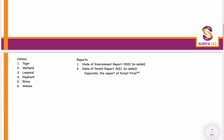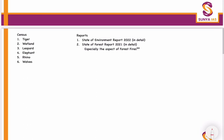With respect to the census, you need to do the census of these six things: the tiger census, the wetland census, the leopard census, elephant census, rhino census, and the wolf census.